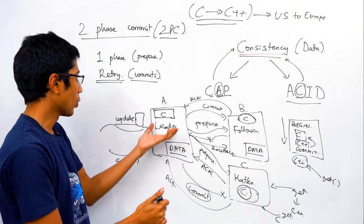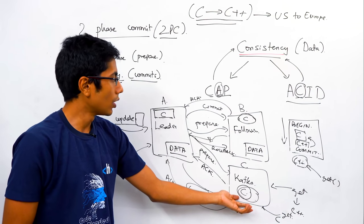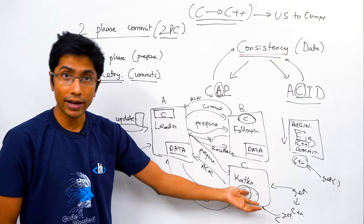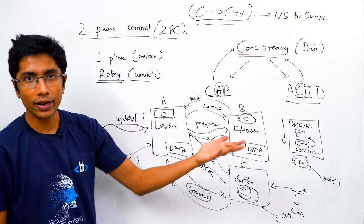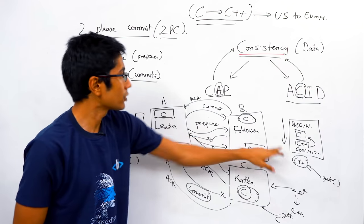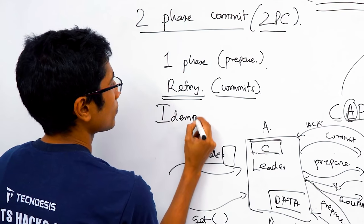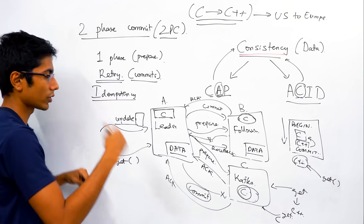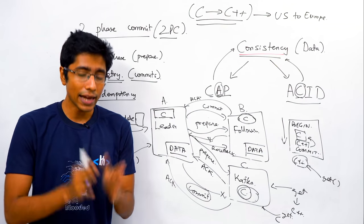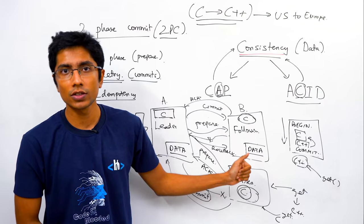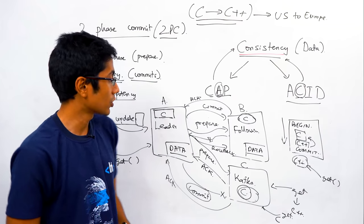Now your system is totally consistent. When people are able to read, they see the same data everywhere. When there's a change, it's reflected across all followers, because you wait for acknowledgement and keep retrying with no side effects — using a transaction ID makes this an idempotent system. This is a good idea if you need absolute consistency, like in a financial system.